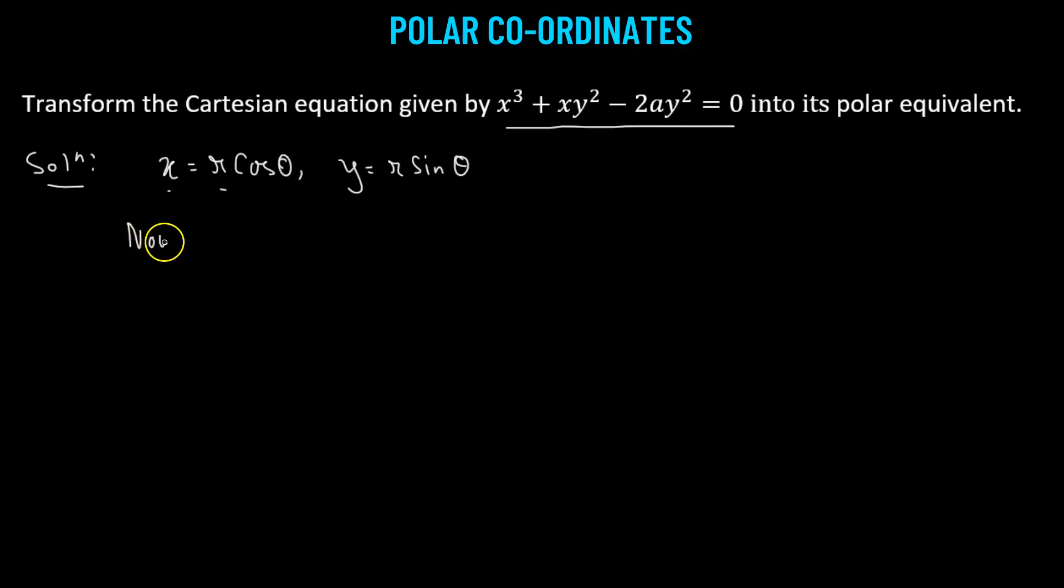Now, what we'll do? We'll consider our equation. We have x cubed plus xy squared minus 2ay squared equals 0. So this is the Cartesian equation.